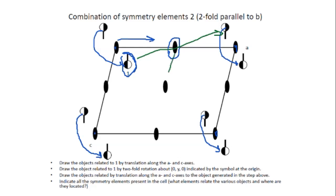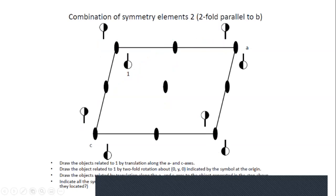Translating generates additional two-fold rotations. At A/2 along A, we generate a new two-fold rotation. Similarly, going down the C-axis generates additional two-fold rotations. The key point is that when you translate symmetry elements, you generate additional locations where that symmetry element occurs. If you've looked at the Mercury assignment, you'll notice symmetry elements not just at the origin but also in the middle of the unit cell.